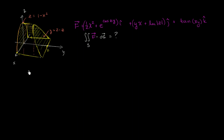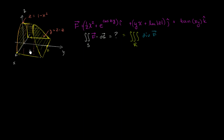Surface integrals are messy as is, especially when you have a crazy vector field like this. But you could imagine there might be a way to simplify this, perhaps using the divergence theorem. The divergence theorem tells us that the flux across the boundary of this simple solid region is going to be the same thing as the triple integral over the region of the divergence of f dV, where dV is some combination of dx, dy, dz — the divergence times each infinitesimal cubic volume.